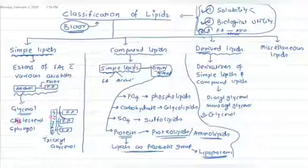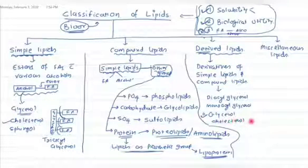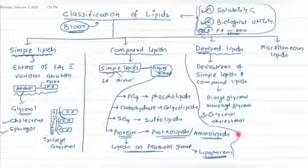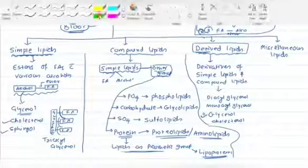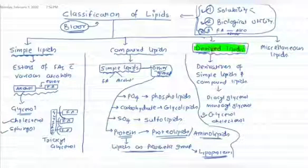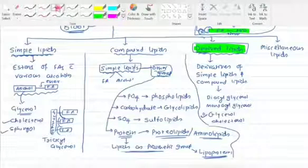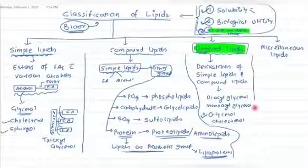Similarly, cholesterol, when separated from its respective fatty acid, can also be considered a derived lipid. Sphingol can also be considered a derived lipid. The derived lipid group is a very tricky one — sometimes a condition is not fulfilled and still we consider that group under the classification of lipids.